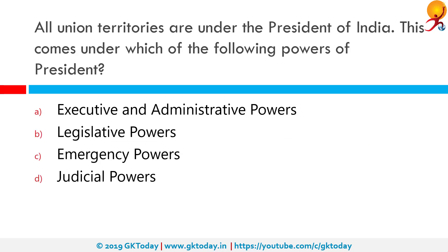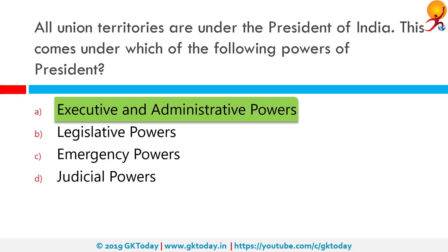All union territories are under the president of India. This comes under which of the following powers of the president? The correct answer is executive and administrative power. The constitution explicitly assigns the president the power to sign or veto legislation, command the armed forces, ask for the written opinion of their cabinet, convene or adjourn Congress, grant reprieves and pardons, and receive ambassadors.